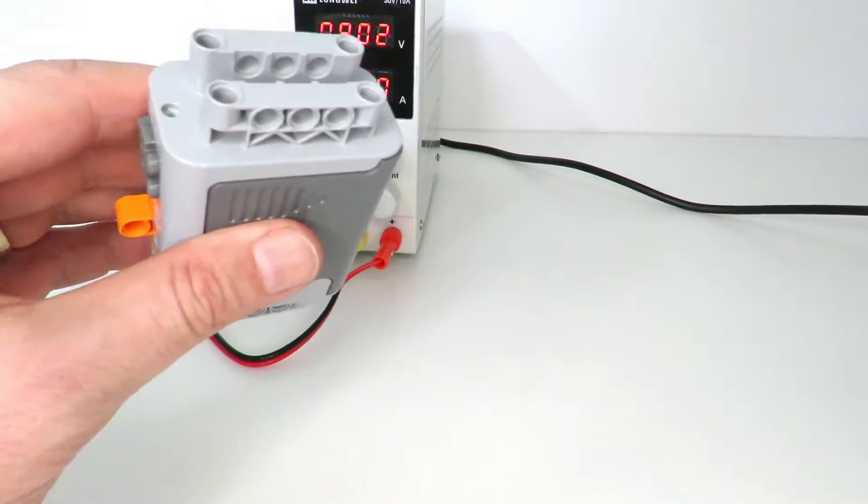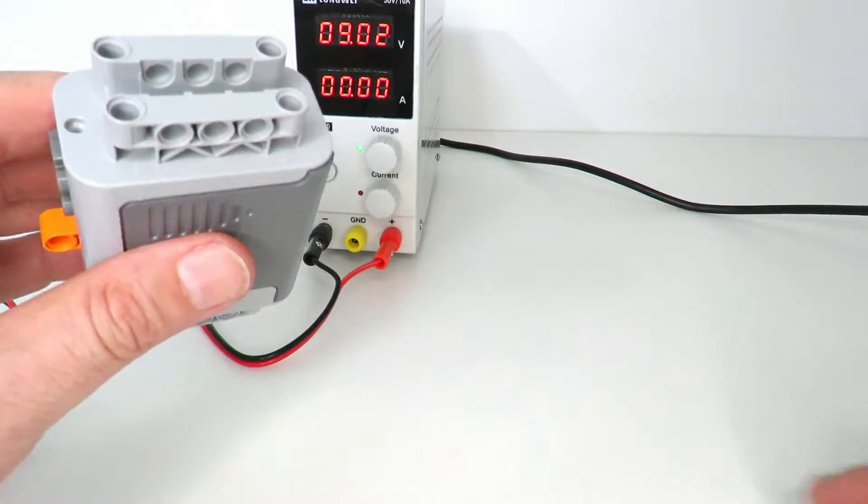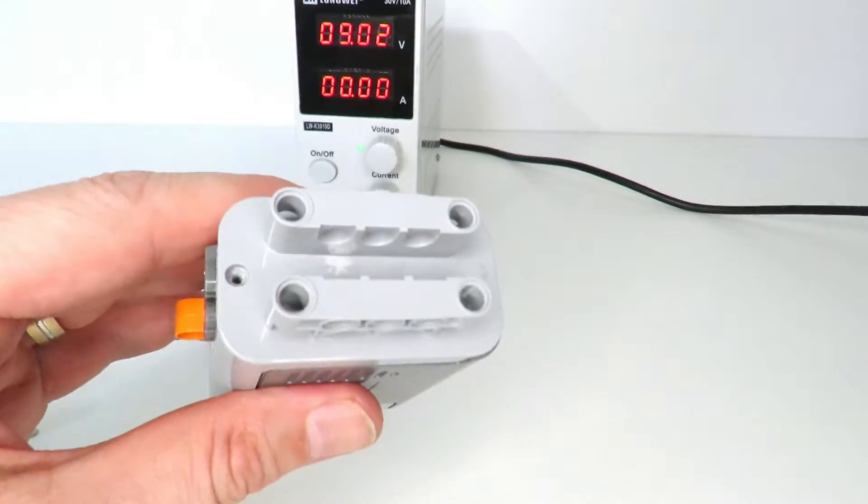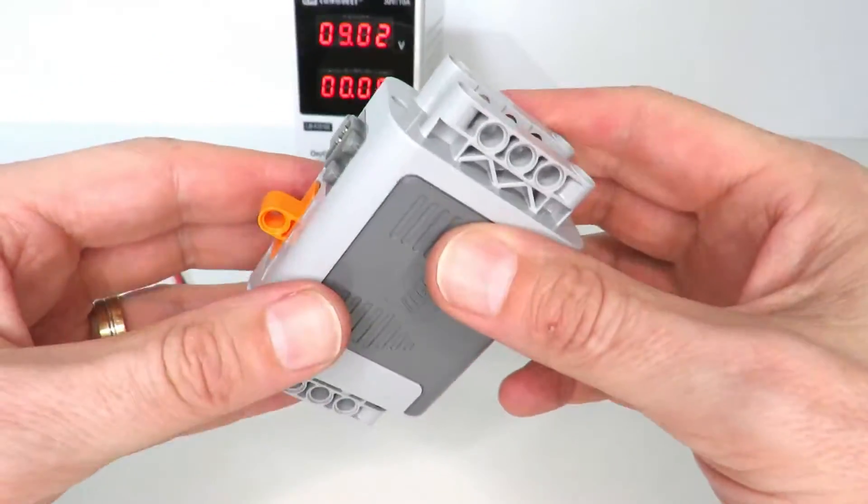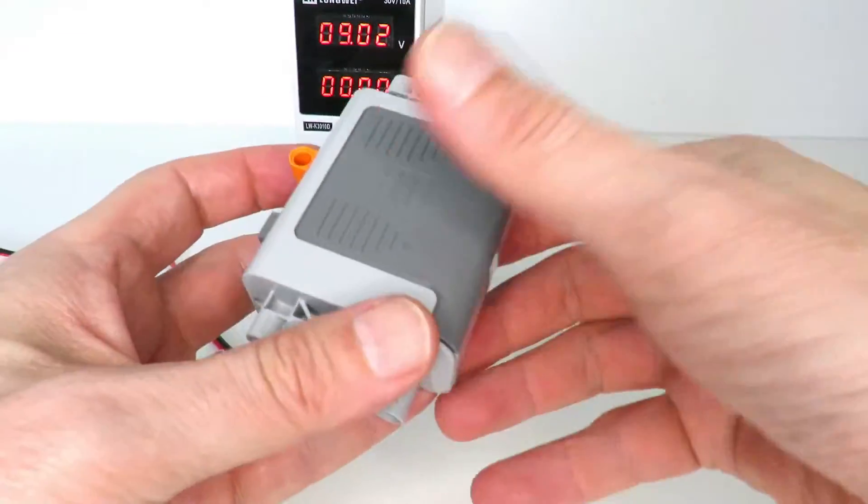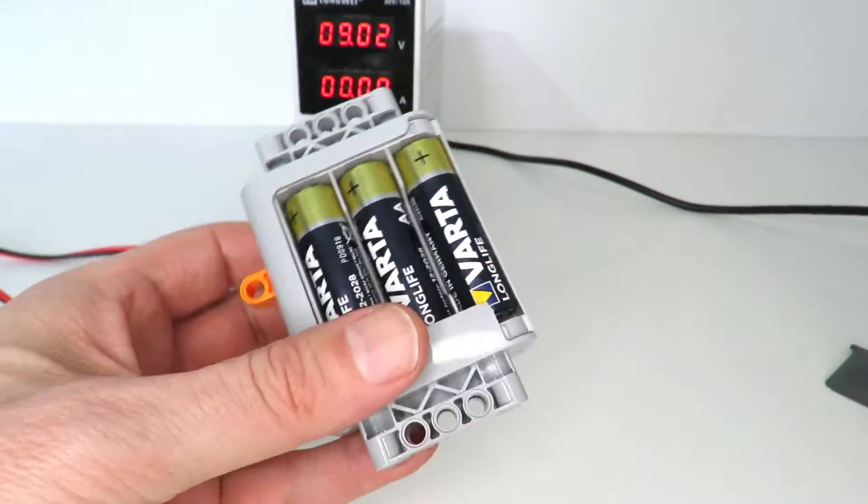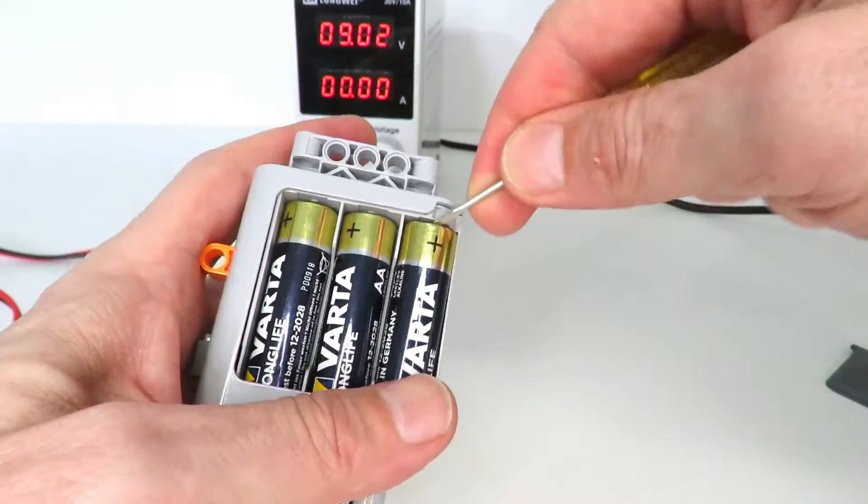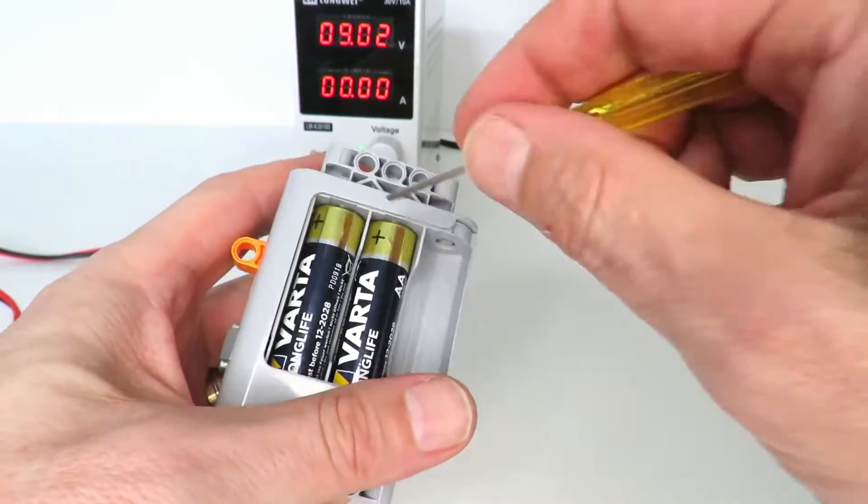Just unscrew those two. One, two, like that. Lost that one. Pick it up. Okay, so now you've unscrewed that, you also then take out your batteries out of the battery pack. Just to make it a bit easier. Not needing them anymore.